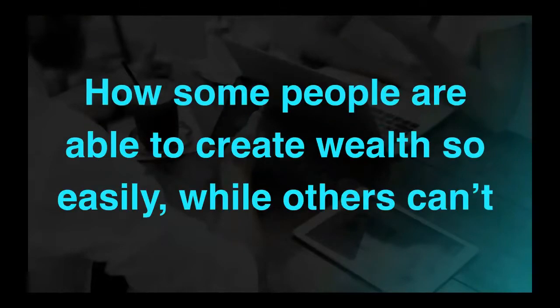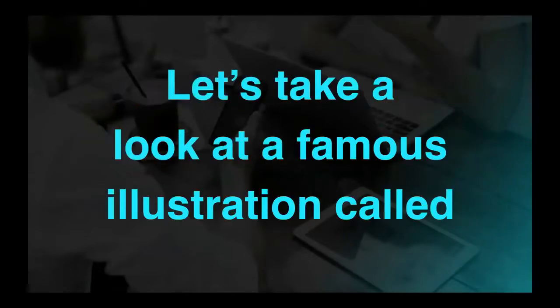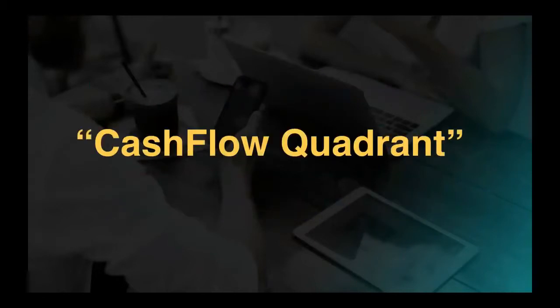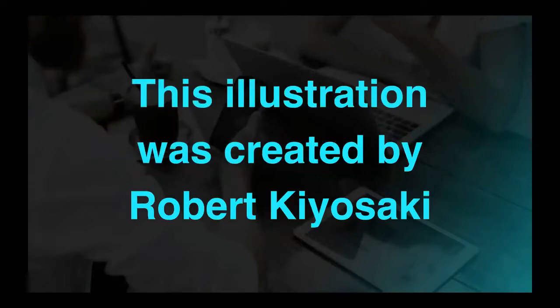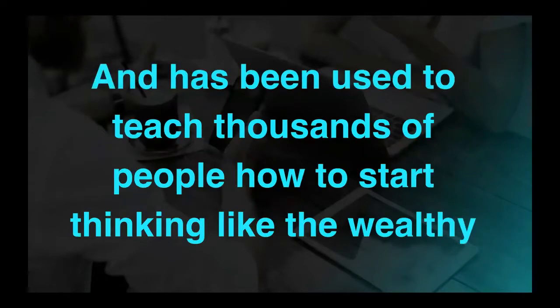To start to understand how some people are able to create wealth so easily and consistently, or even how they move from being poor to wealthy, while others can't and just can't even seem to understand how it's possible, let's take a look at a famous illustration called the cashflow quadrant. This illustration was created by Robert Kiyosaki more than a couple decades ago, and it's been used to teach thousands of people how to start thinking like the wealthy.